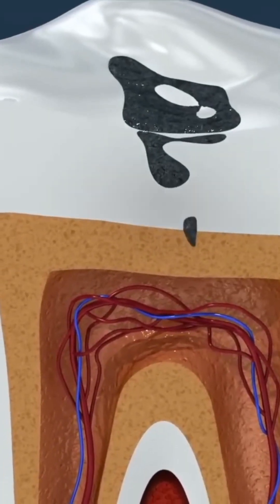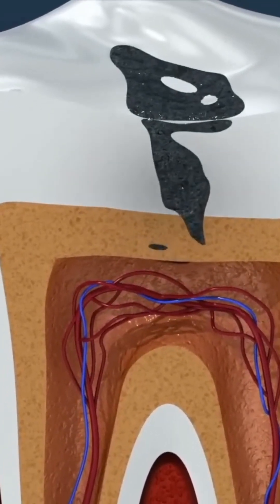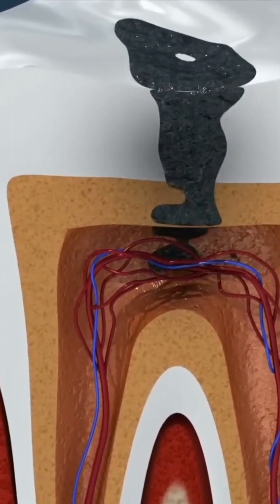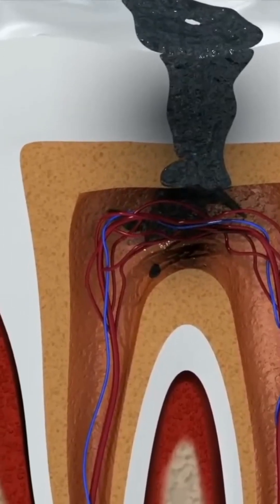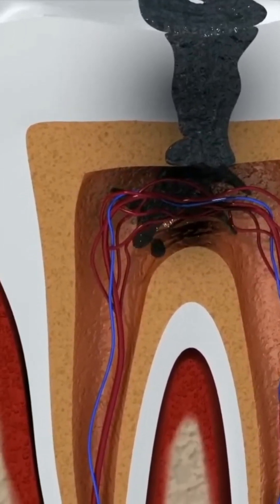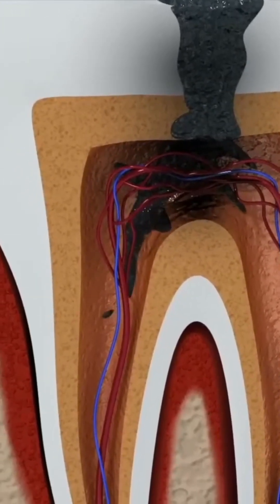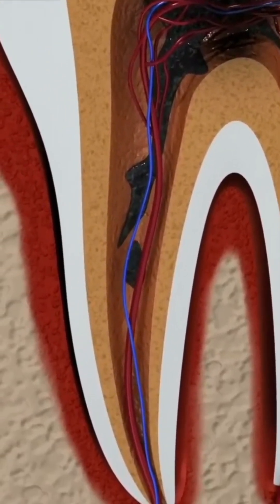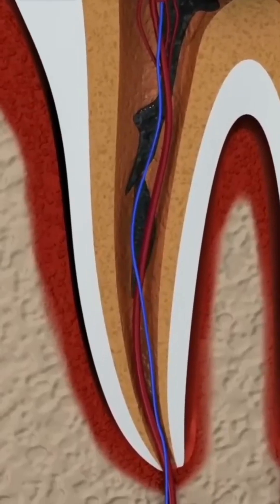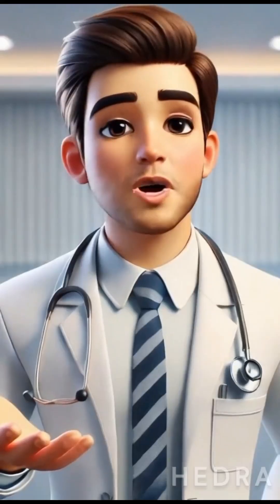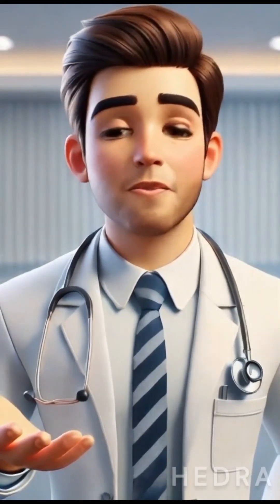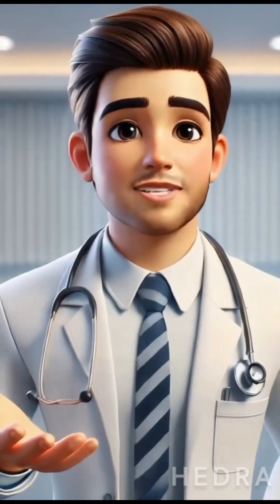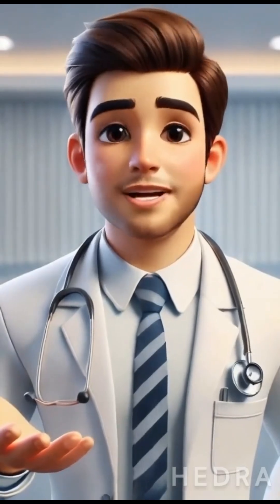When a cavity goes deep into your tooth, it's not only inside the tooth enamel, it's not in the dentin, which is the middle layer. Now it's into the nerve of the tooth, so you can't fix it with a filling anymore. You need a root canal to save the tooth. Let's watch the process of repairing and saving a damaged or infected tooth with a root canal.